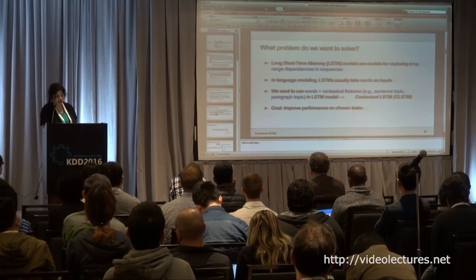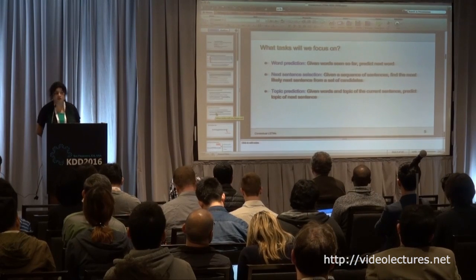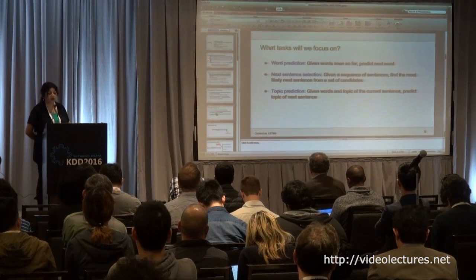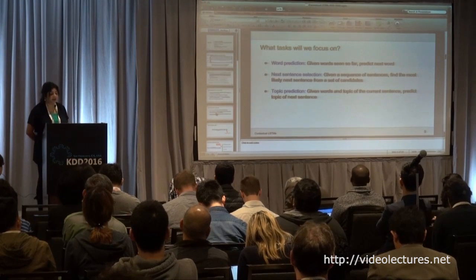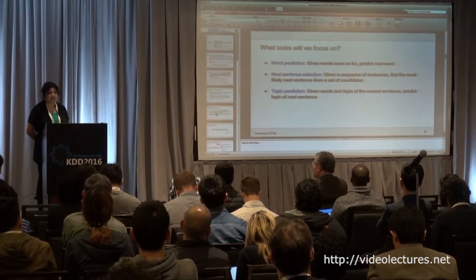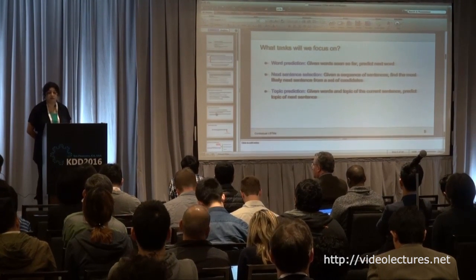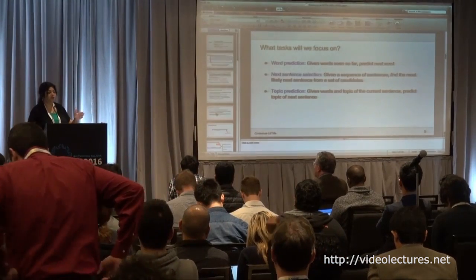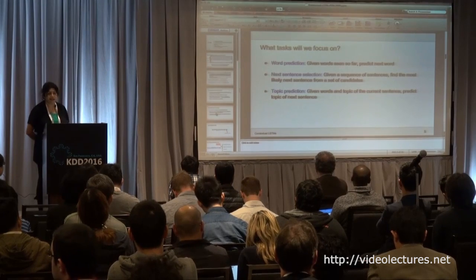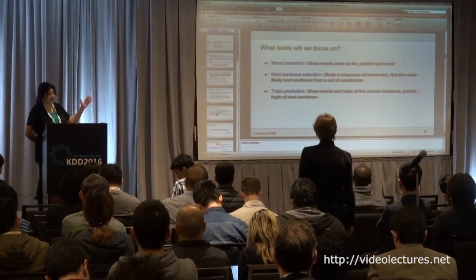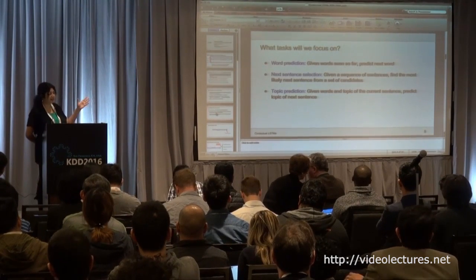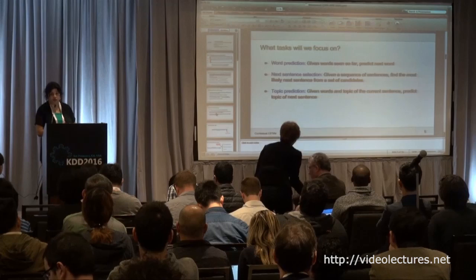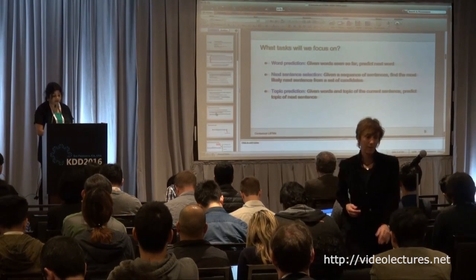We focused on three different tasks. One was the canonical word prediction task: given the words seen so far, predict the next word. The second task was next sentence selection — given the context seen so far, select the most likely next response, which is important for dialogue systems. Formally, given a sequence of sentences, find the most likely next sentence from a candidate set. The third task is topic prediction: given the words and topic of the current sentence, predict the topic of the next sentence.